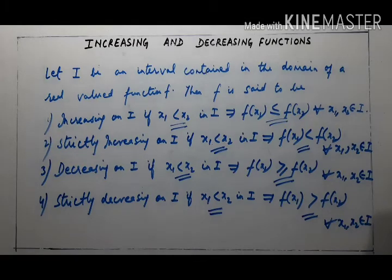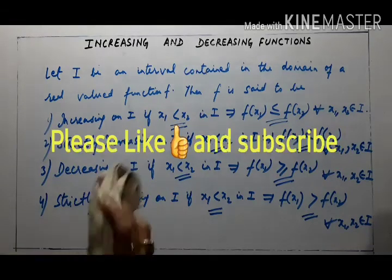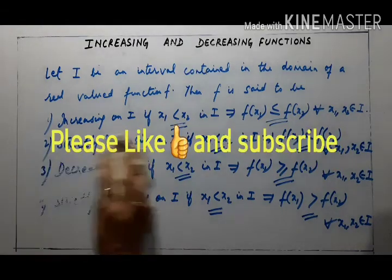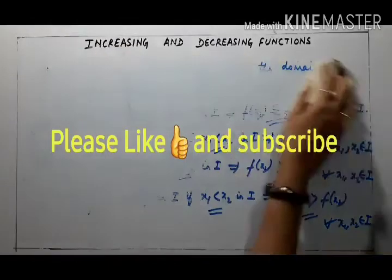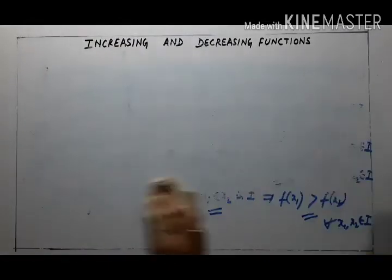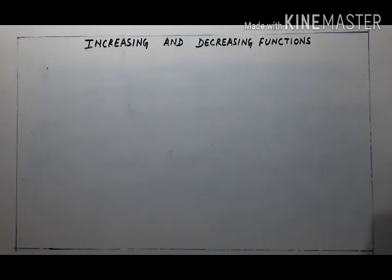Now we will understand this through graphs. I hope increasing, strictly increasing, decreasing, and strictly decreasing are now well understood. Let us rub this and explain through graph. So what are we seeing in the graph?